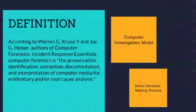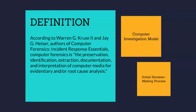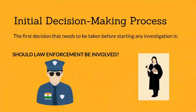Before you begin each of the general investigation phases, you should apply the initial decision-making process. You should determine whether or not to involve law enforcement, with the assistance of legal advisors. If you determine that law enforcement is needed, then you need to continue the internal investigation unless law enforcement officials advise you otherwise. Law enforcement might not be available to assist in the investigation of the incident, so you must continue to manage the incident and investigation for later submission to law enforcement.